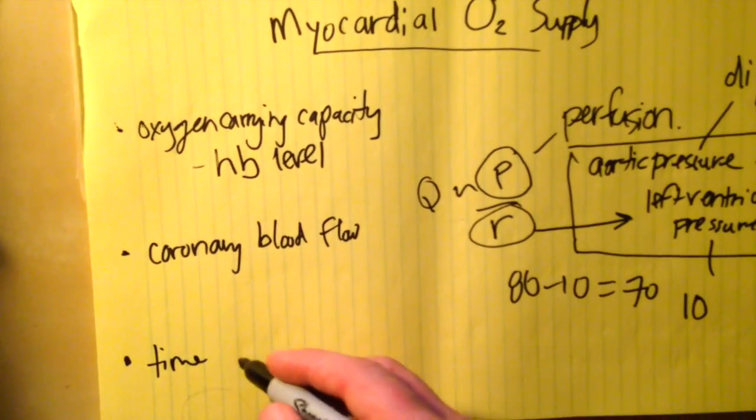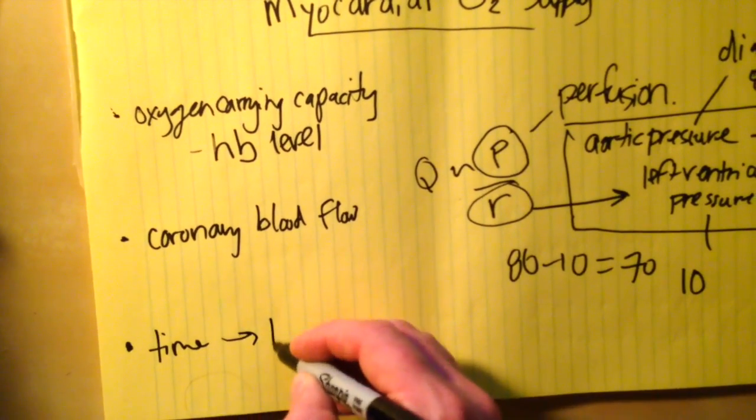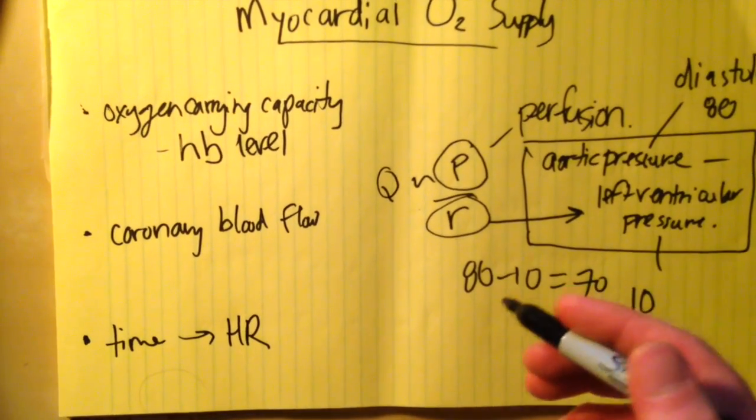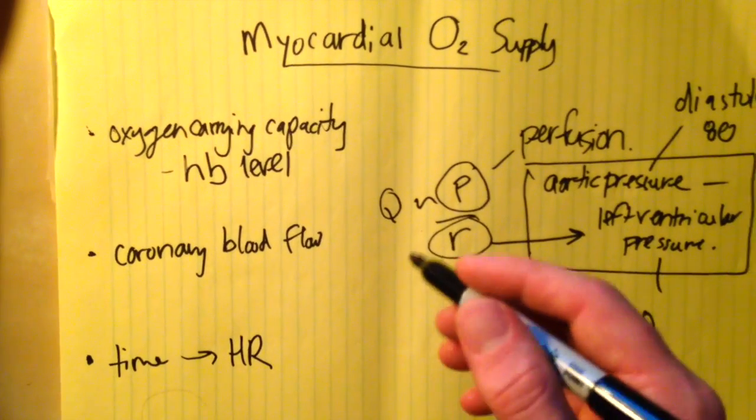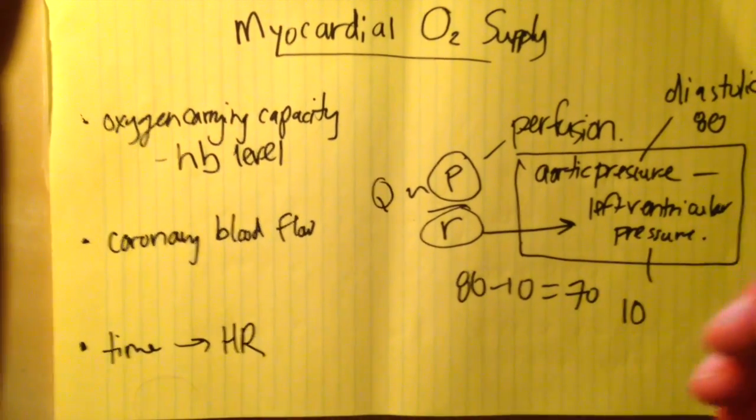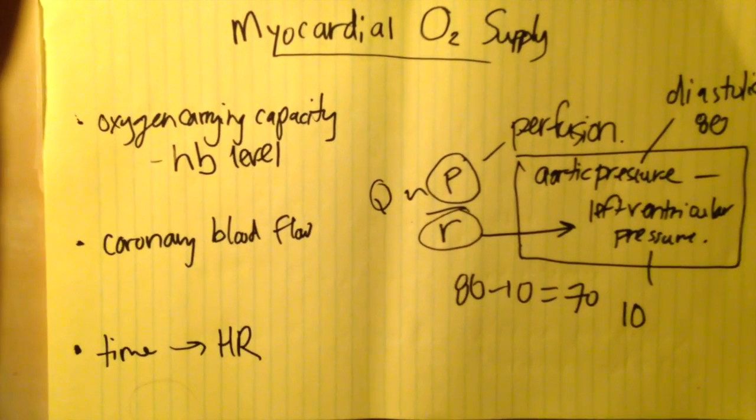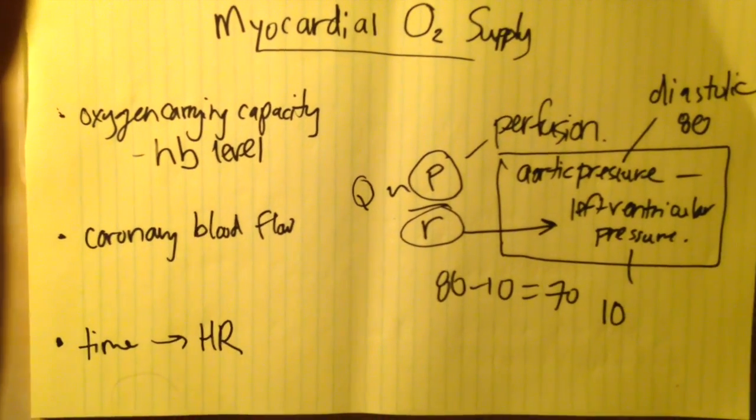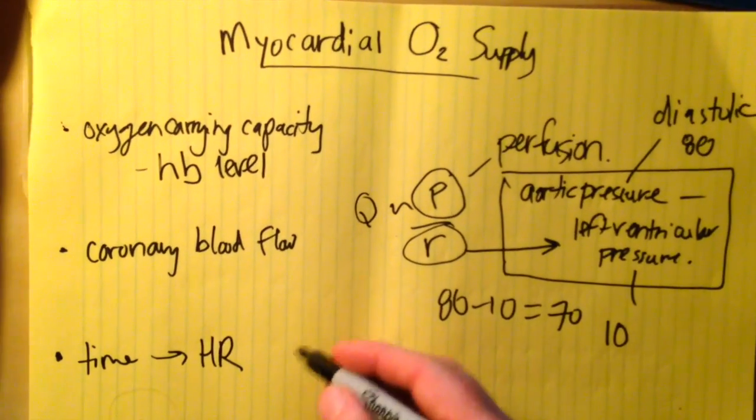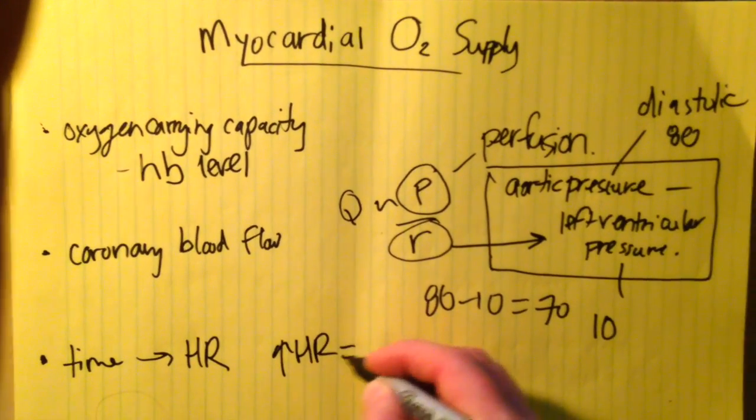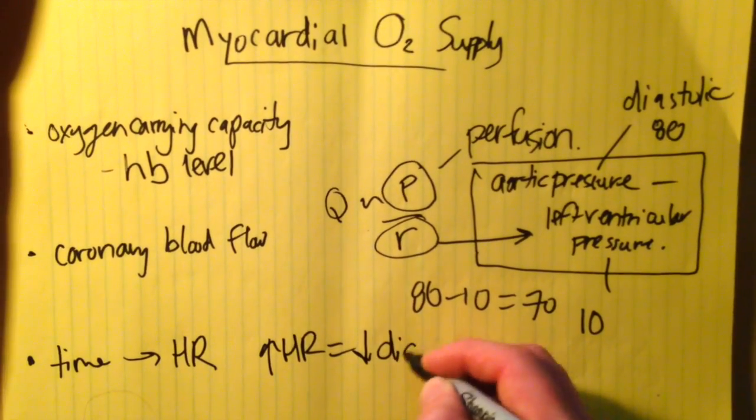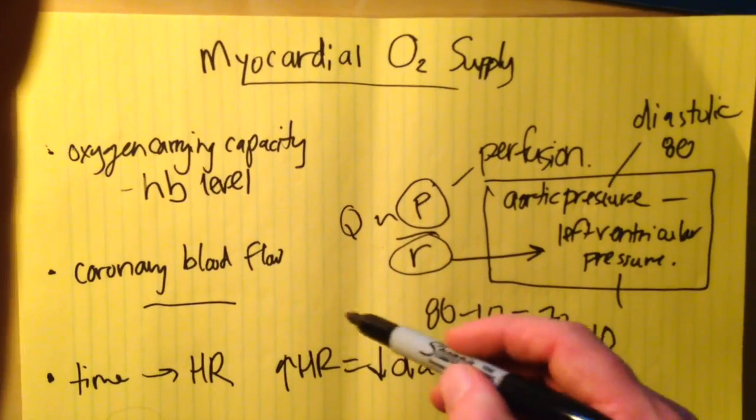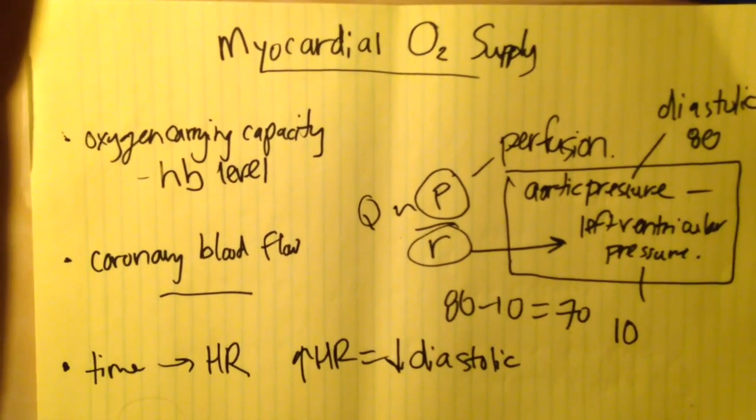Our third major category is time, which is affected by heart rate. The coronary arteries are perfused during diastole. In each cardiac cycle, the time in systole is constant - it takes the heart a certain amount of time to beat. What varies depending on heart rate is the time in diastole. If you have an increased heart rate, you have less diastolic time and less time for blood flow to perfuse the myocardium and deliver oxygen.